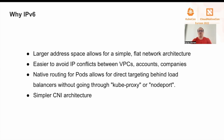Native cloud routing for pods allows direct targeting behind load balancers without going through kube-proxy or node port. It's both a performance and debugging improvement. CNIs can also be much simpler if they are designed for IPv6.